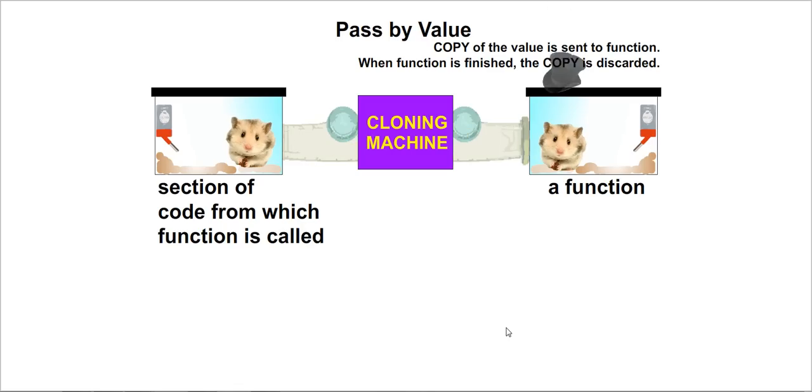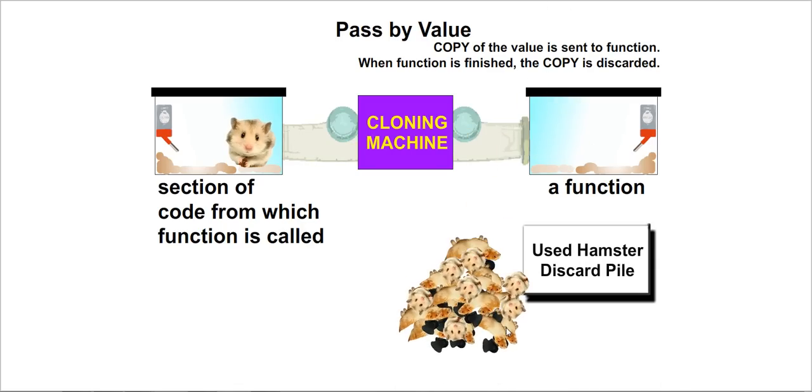If you pass by value, it makes a copy. If you make changes to the copy, once the function's operations are finished, that copy is discarded.